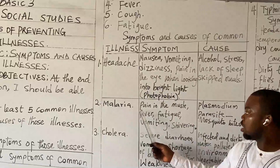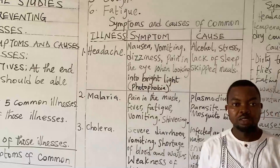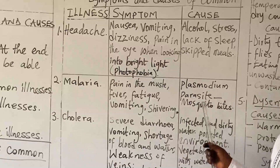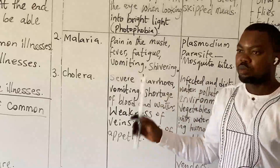Number two, malaria. The symptoms of malaria include pain in the muscle, we have fever, we have fatigue, vomiting, and we have chills. What are the causes of this malaria? We have the plasmodium parasite, which is transmitted through mosquito bites — that's what we know as mosquito bites.